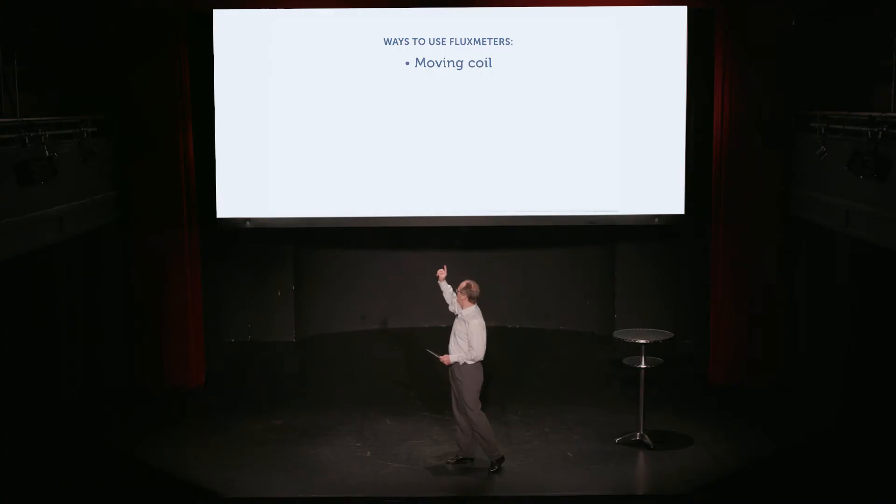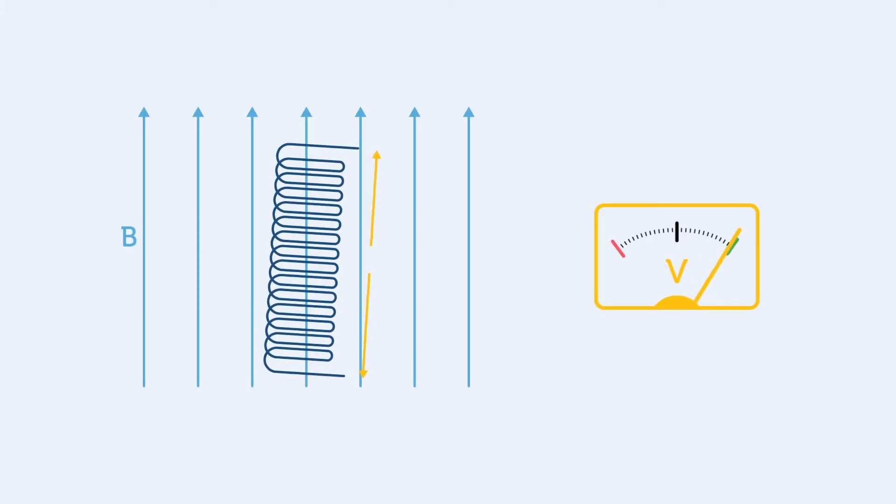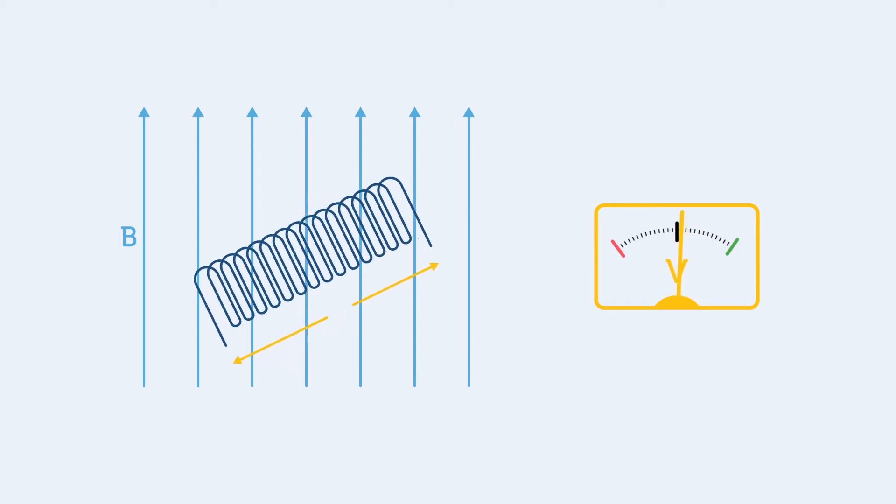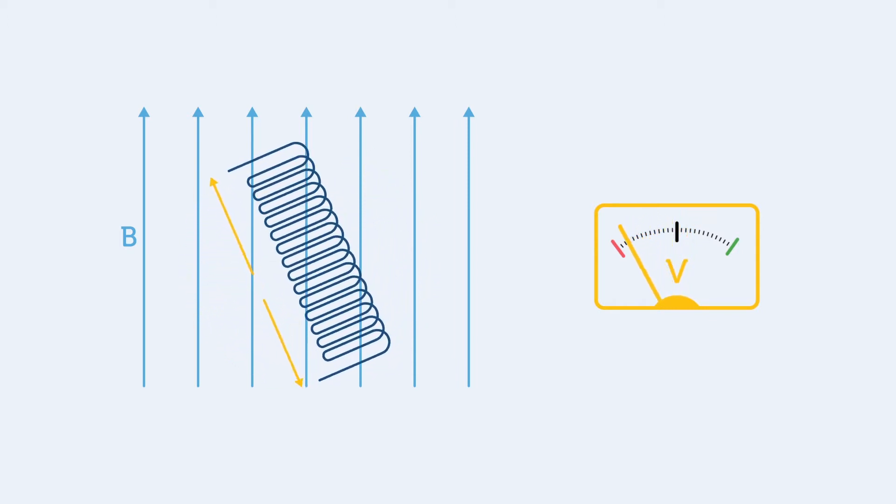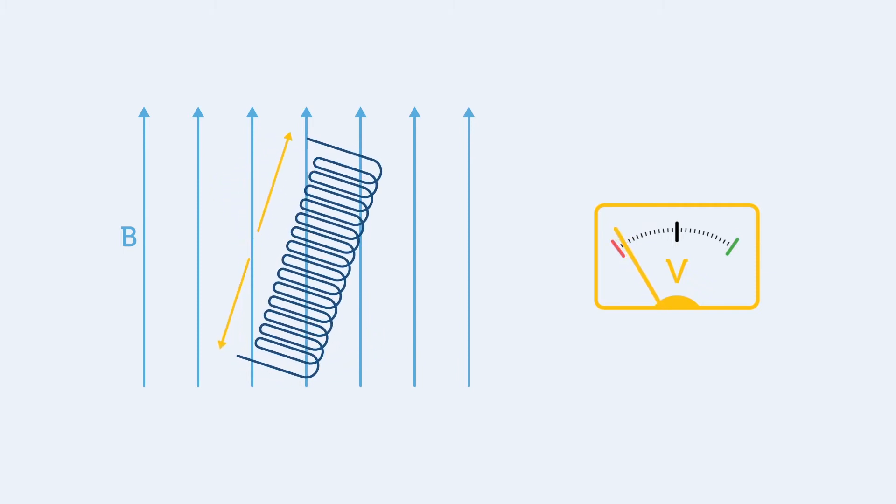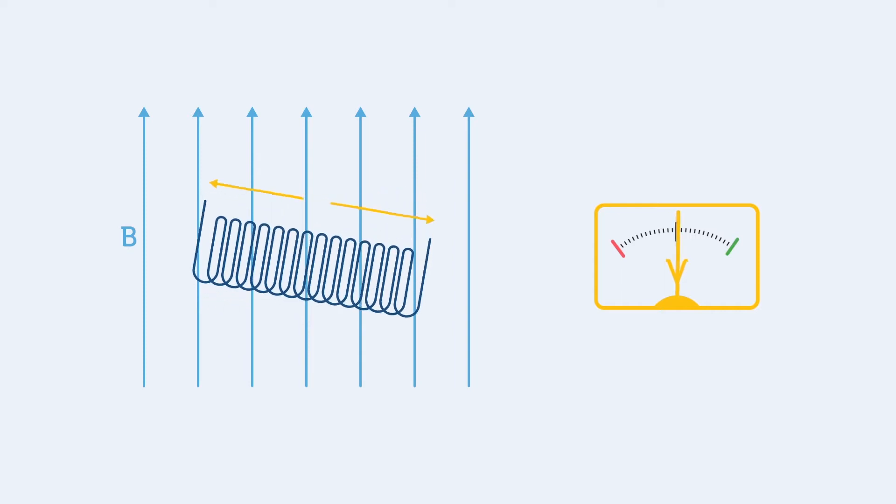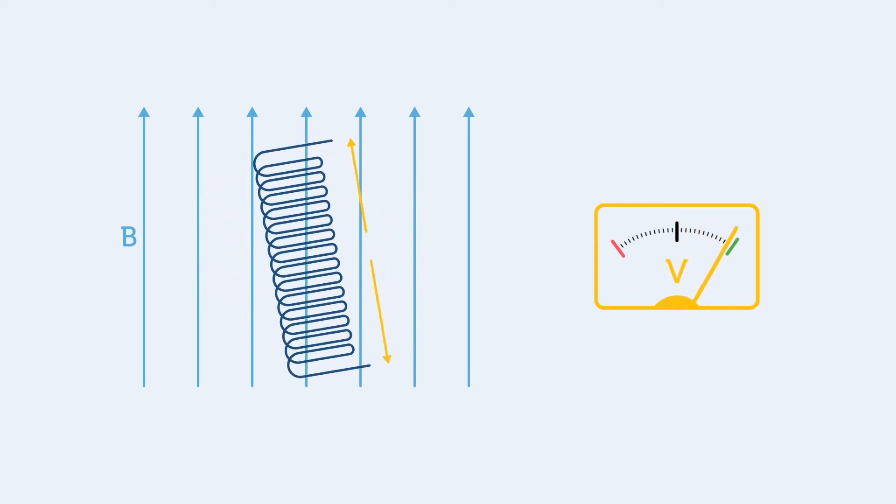Now, there's another way that we could have measured the flux density at that particular point. We could have flipped the coil. And since the flux changes from being positive to being negative, we have twice the flux when we flip it. And by measuring that flux change and dividing by two, we can find the flux density at that particular point.